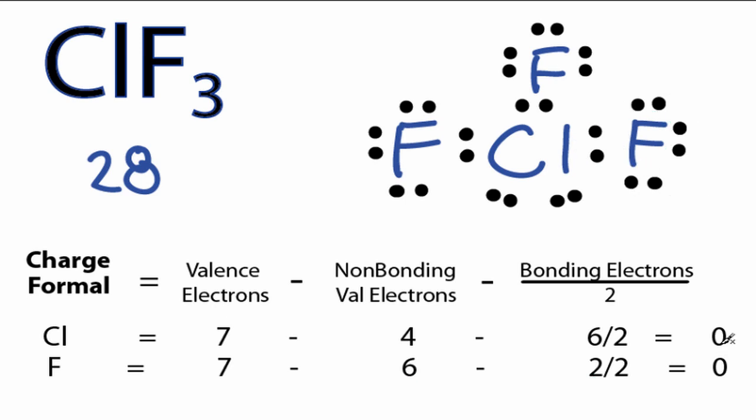In our Lewis structure for ClF3, we have formal charges of 0 for each of the atoms. We've used all the valence electrons, so this is the best structure for ClF3. This is Dr. B. Thanks for watching.